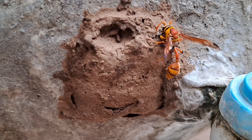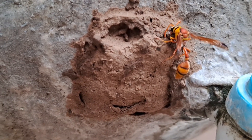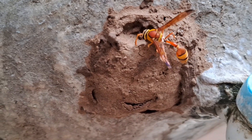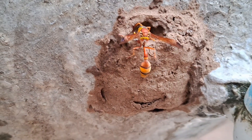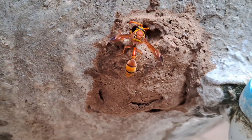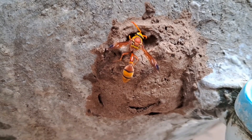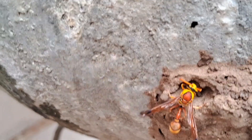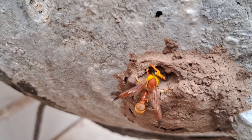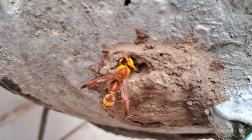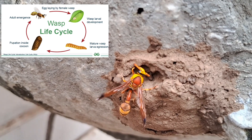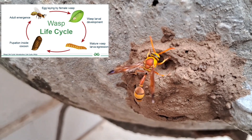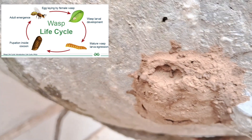In the muddy nest, the wasp makes compartments known as cells, and in those cells the wasp lays its eggs. After that, the wasp stings and paralyzes spiders and other insects and takes them into the nest to feed the larvae that come out of the eggs.